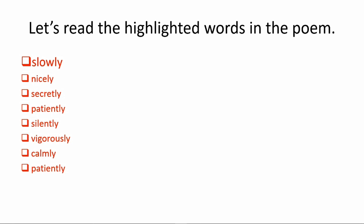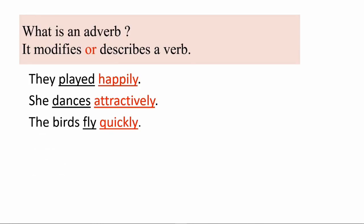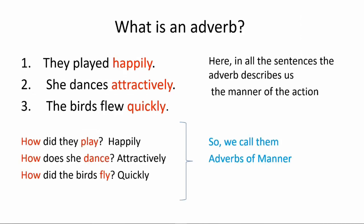Slowly, nicely, secretly, patiently, silently, vigorously, calmly, patiently. What do you call these words? We call them adverbs. Yes, my dear children — what is an adverb? It modifies or describes a verb. Now look at these sentences: They played happily. She dances attractively. The birds fly quickly. How did they play? Happily. How does she dance? Attractively. How did the birds fly? Quickly.